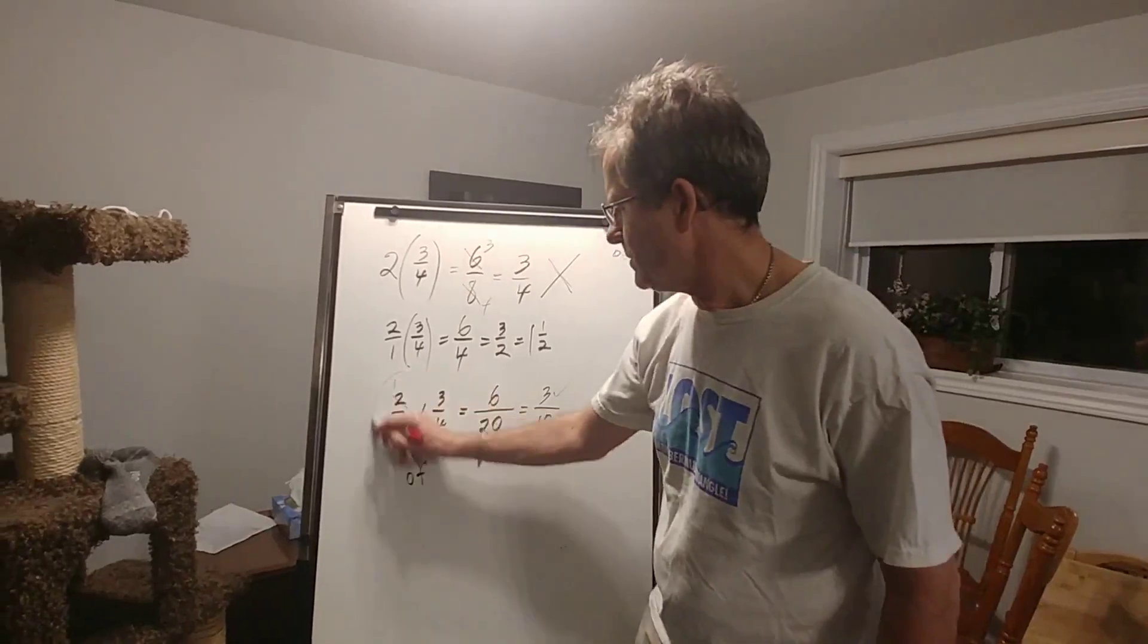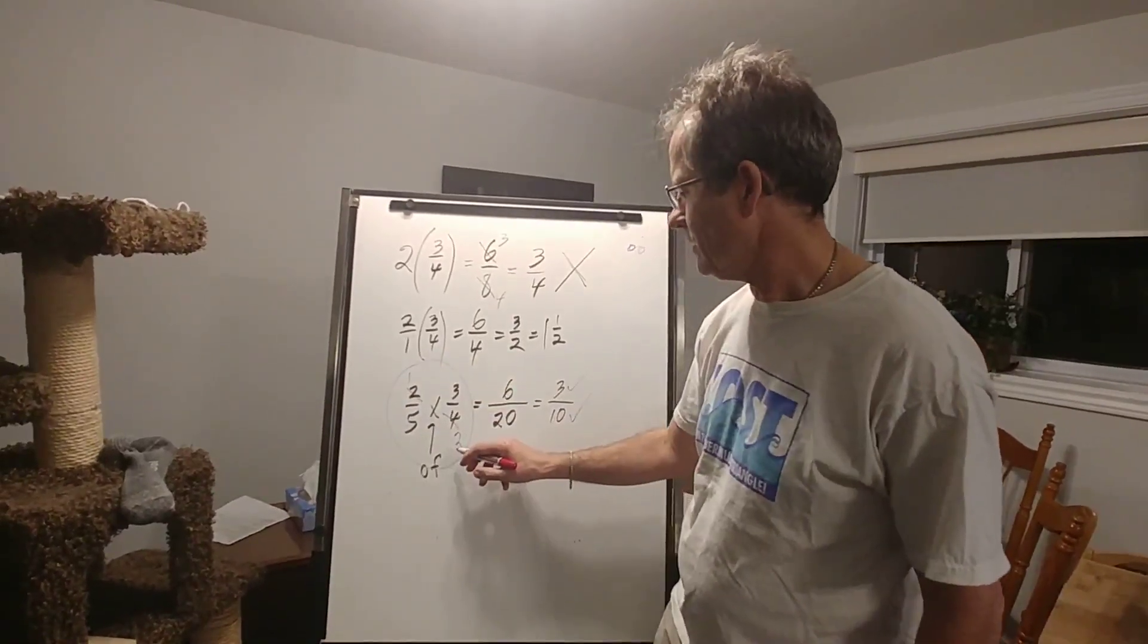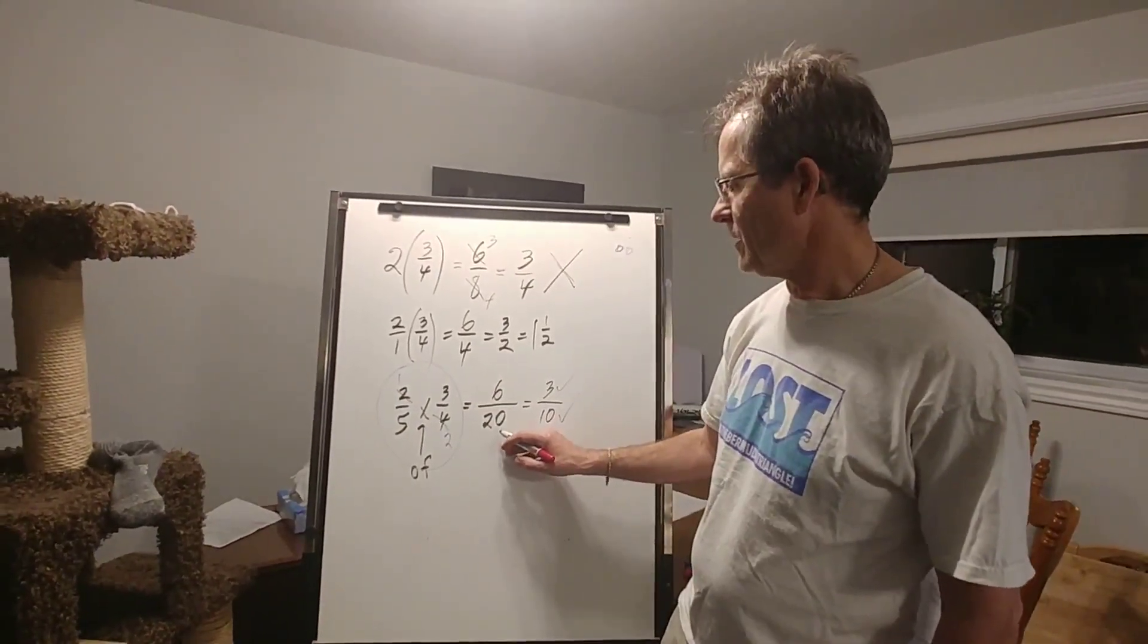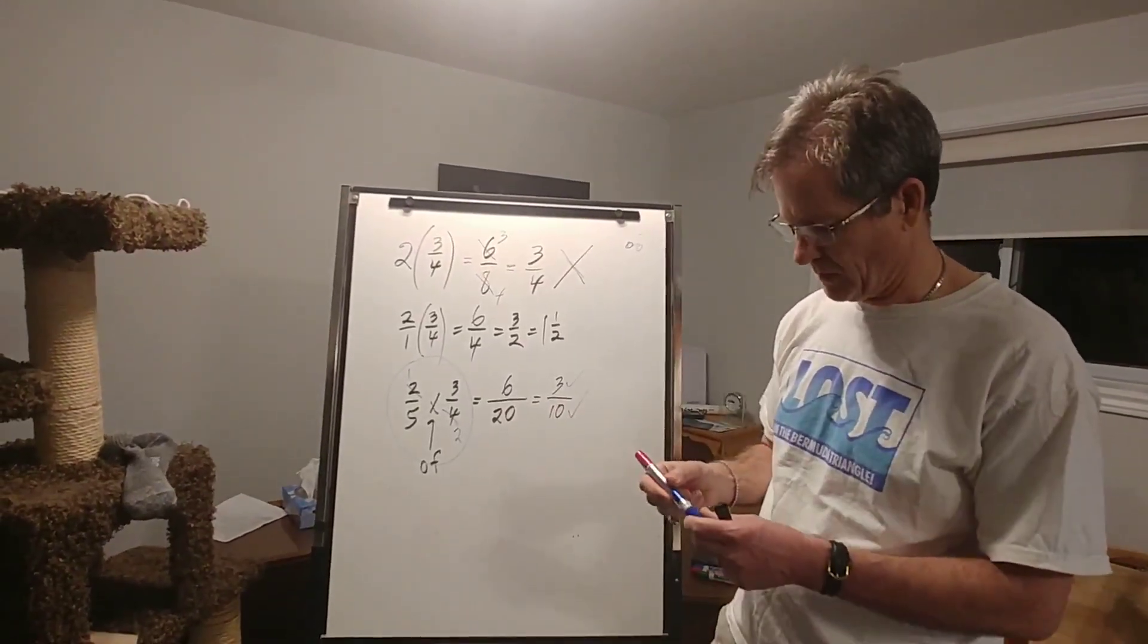I recommend reducing first, like I did here, because then you avoid bigger numbers. These aren't terribly big numbers, but sometimes they can get really big.